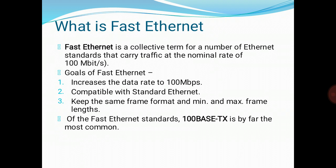The goals of Fast Ethernet can be summarized as follows: first, upgrade the data rate to 100 Mbps; second, make it compatible with standard Ethernet; third, keep the same frame format; and fifth, keep the same minimum and maximum frame lengths.